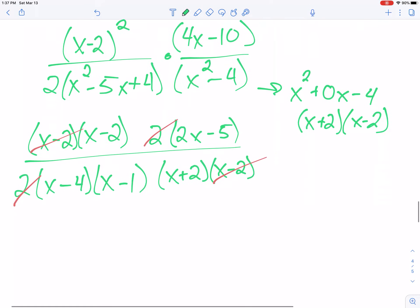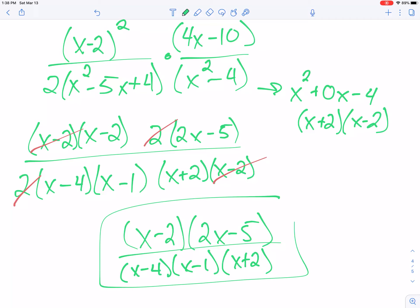So that means my final answer is x minus 2, 2x minus 5, over x minus 4, x minus 1, x plus 2. That is your simplified answer.